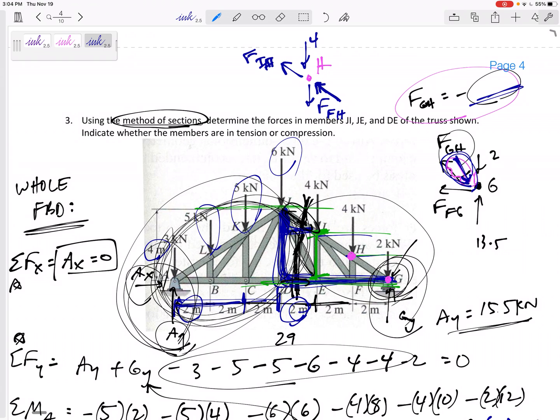In general, we use method of sections for longer, bigger trusses when we want to know kind of some of the middle members. We use method of joints if we've got smaller sections, or if we're just concerned with one of the members near a joint, then maybe method of joints would be the best method. For my final exam, you don't have to decide on your own, I will tell you in the problem statement whether you need to do method of sections or method of joints. Okay.